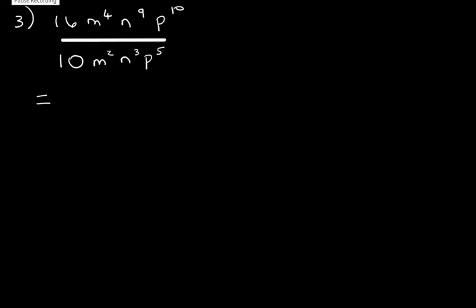Let's look at another example. So we have 16m to the power 4n to the power 9p to the power 10 divided by 10m squared n cubed and p to the power 5. Again, what do we need to do? We need to simplify our integers by finding the highest common factor. So the highest common factor of 16 and 10 is 2. And when we simplify, we get 8 over 5.